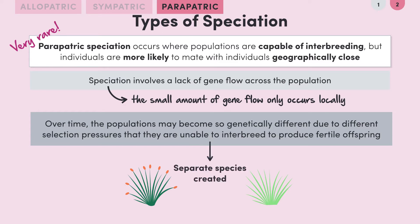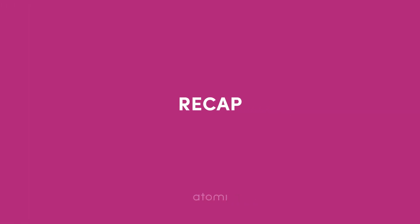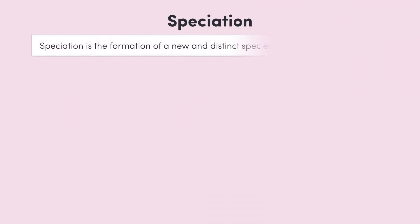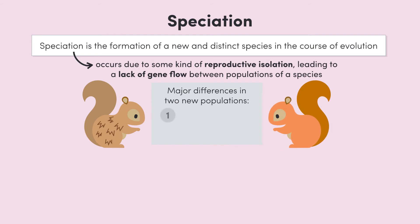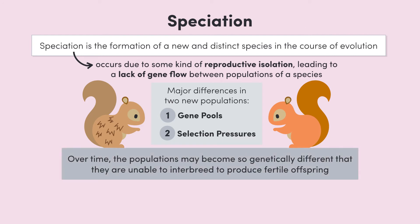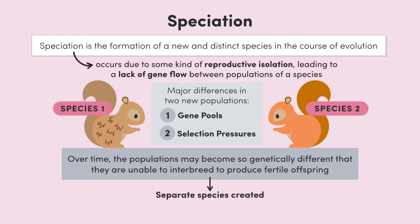Time for a recap. Speciation is due to some kind of reproductive isolation, which leads to a lack of gene flow between populations of a species. Over time, the gene pools in each population develop independently according to different selection pressures. We say that speciation has occurred when the genetic differences between individuals from each population are so great that they wouldn't be able to interbreed to produce fertile offspring, even if they were able to mingle again.